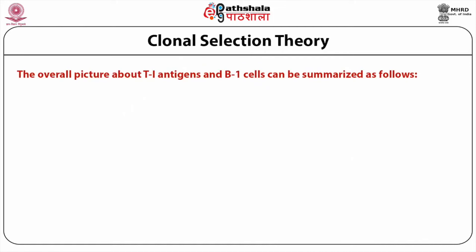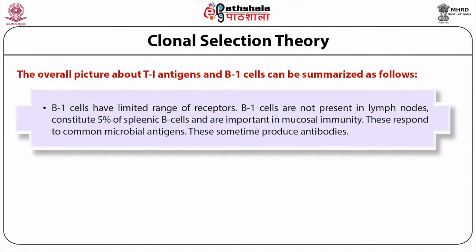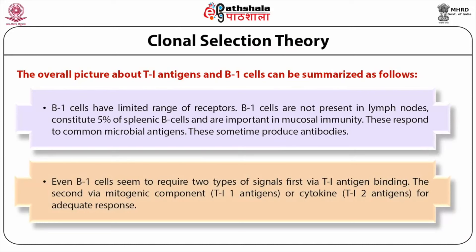The overall picture for Ti antigens and B1 cells: B1 cells have a limited range of receptors, are not present in lymph nodes, constitute 5% of splenic B cells, and are important in mucosal immunity. They respond to common microbial antigens and seem to require two types of signals — first via Ti antigen binding, and second via the mitogenic component of Ti1 antigens or cytokines for Ti2 antigens — for adequate response.